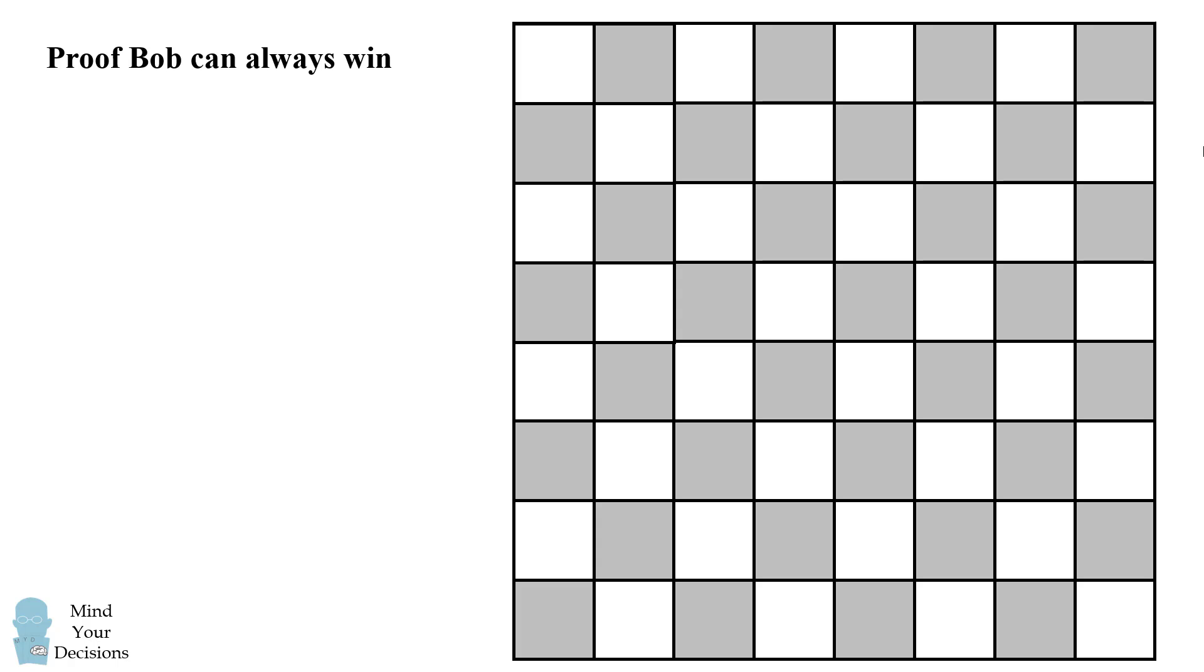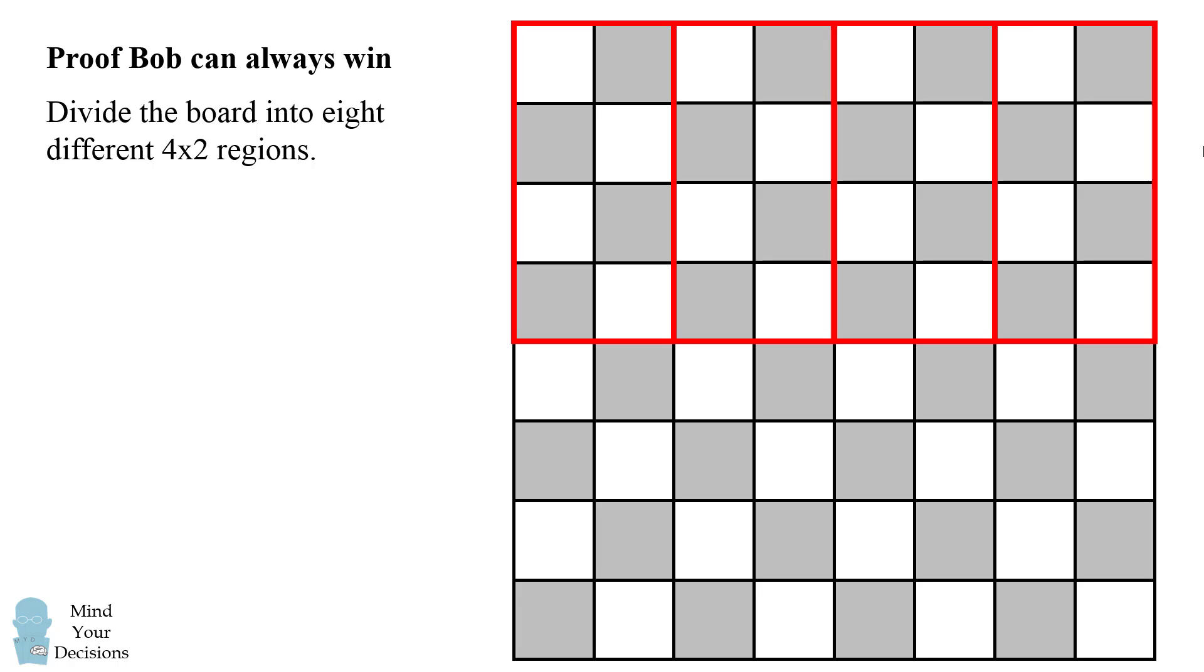Let's prove that Bob can always win this game. We start out with our chessboard and we're going to divide it into eight different 4x2 regions. So one, two, three, four, five, six, seven, and eight. So what's so important about these?